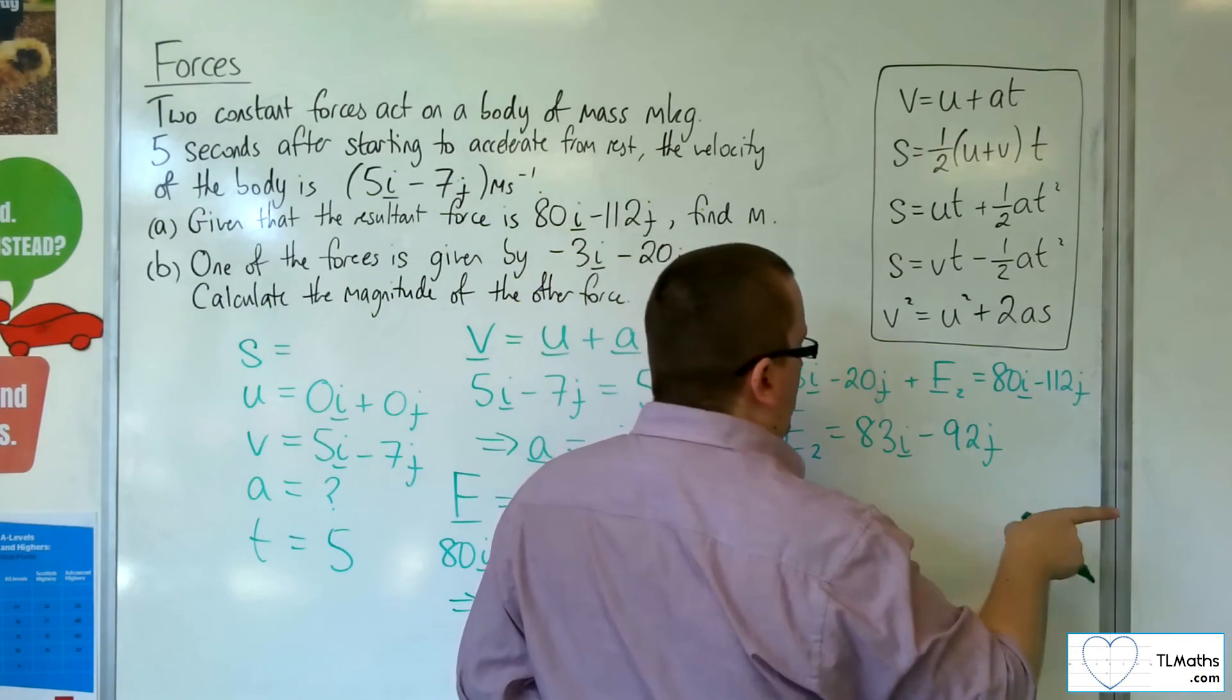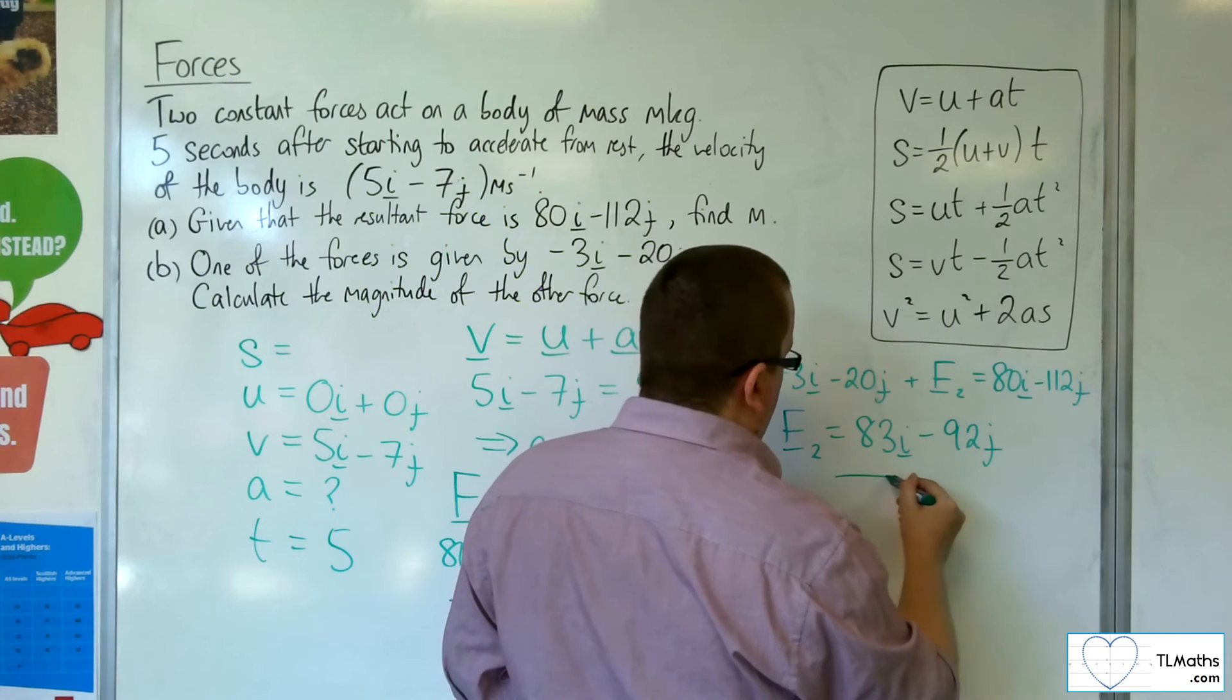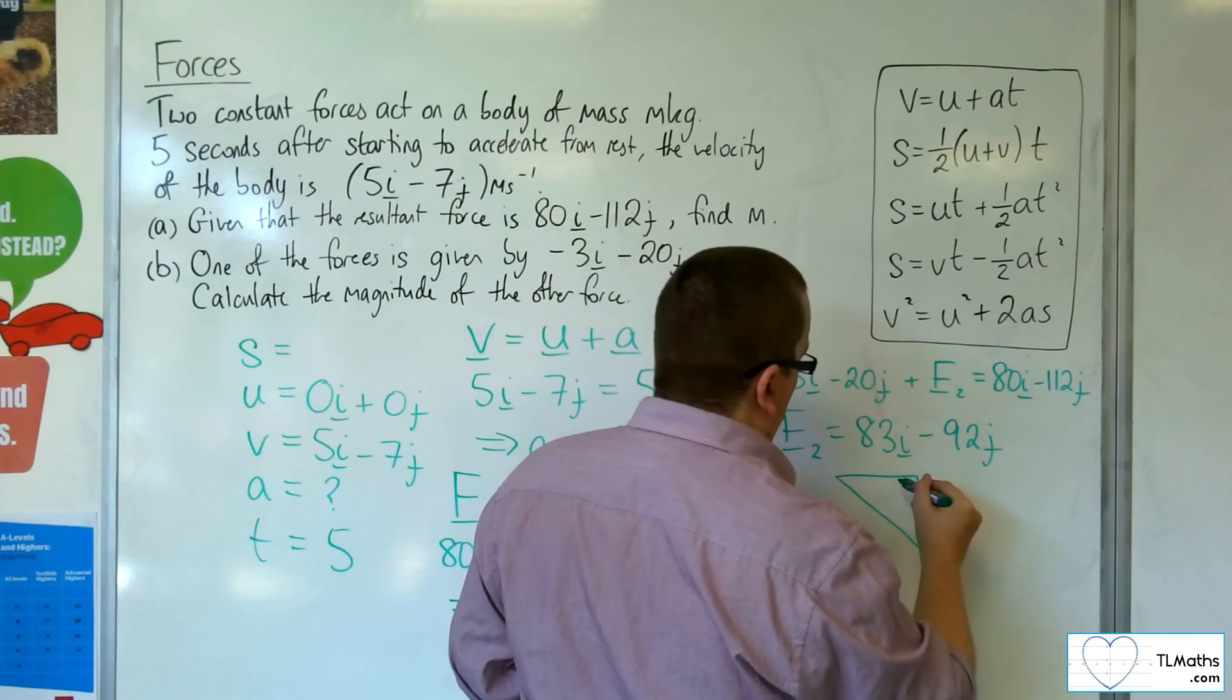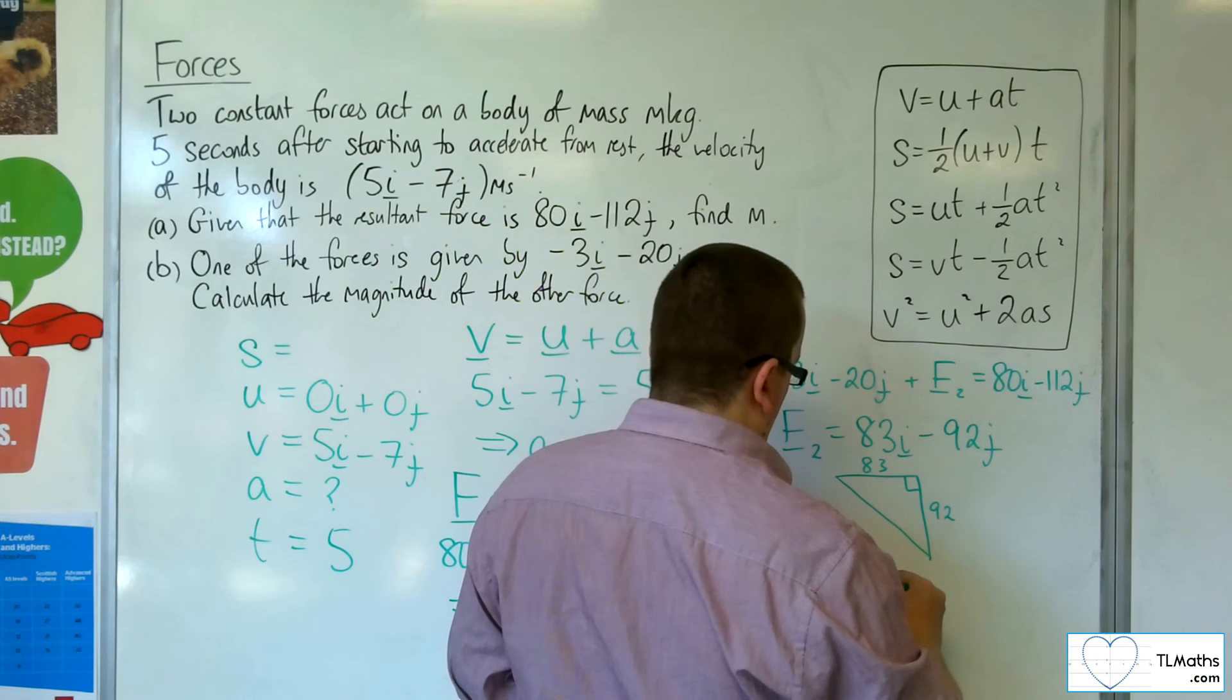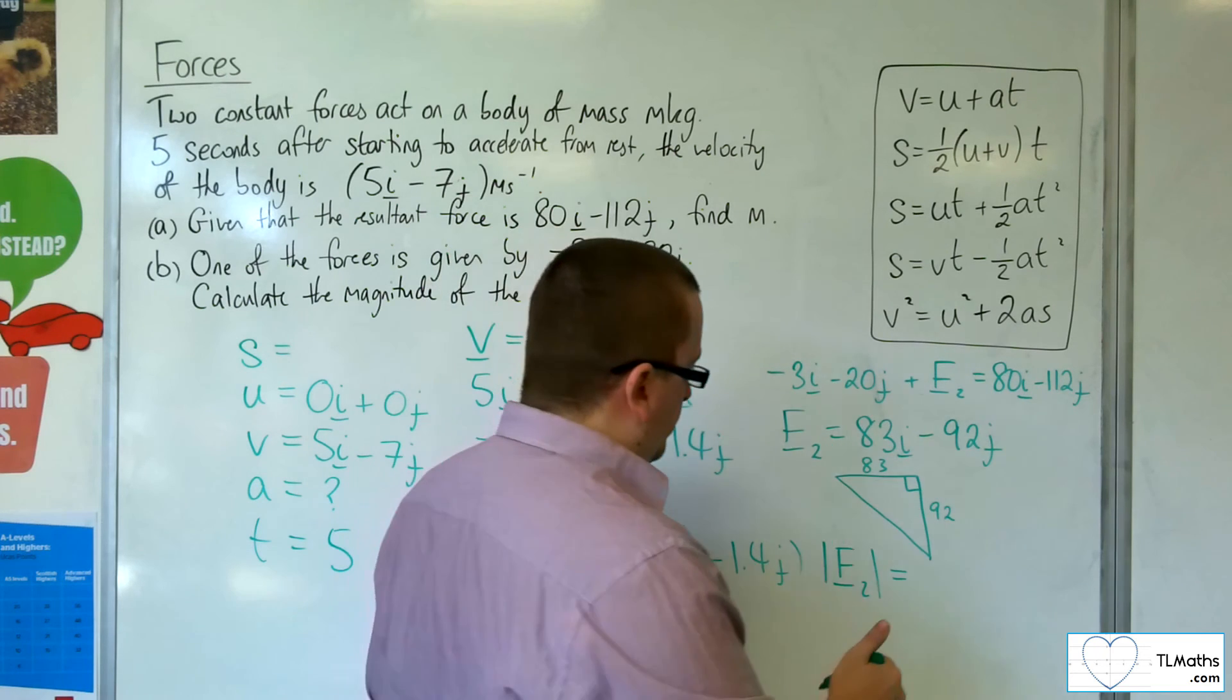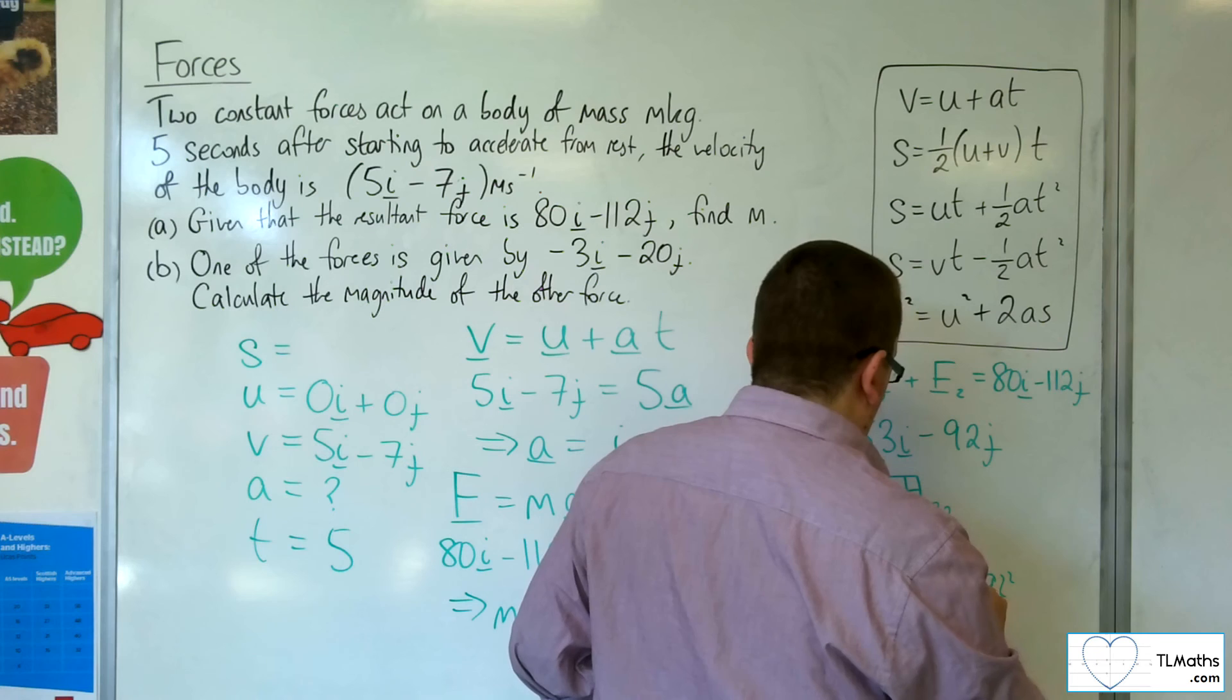So 83i, 83 along, 92 down makes a right-angled triangle. So the magnitude of f2 is equal to the square root of 83 squared plus 92 squared.